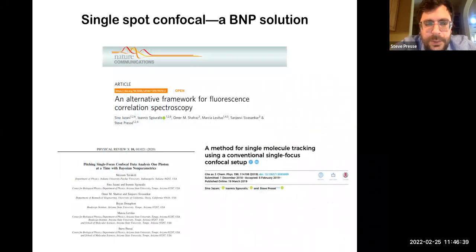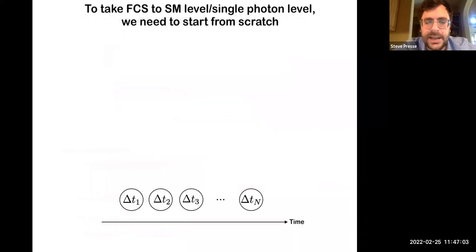So in a PRX in 2020 and the Nature Communications in 2019 and a subsequent paper that I'll be talking to you about shortly in terms of future directions, we tried to address this problem. We tried to learn basically everything that FCS does, but perhaps with two orders, sometimes with three orders of magnitude less data from a couple thousand photons. And now we're going to eventually extend it to dynamics. So in order to take single spot confocal correlative analysis, FCS, to the single molecule level, we really need to start from scratch.